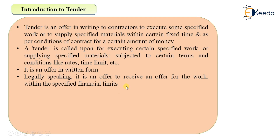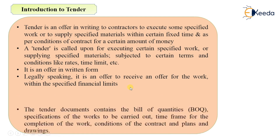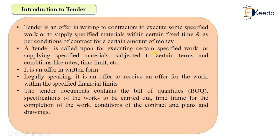For example, if a contractor has to execute a work or supply materials to some department or owner, he must be financially stable — he must have some financial limits because he will be paid, maybe in advance or maybe not. The contractor should be capable; if he is accepting that particular tender, he should be capable of doing or completing that particular work or supplying that particular material.